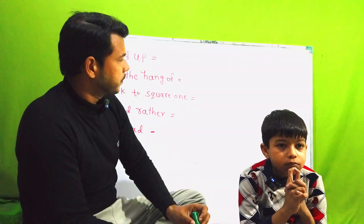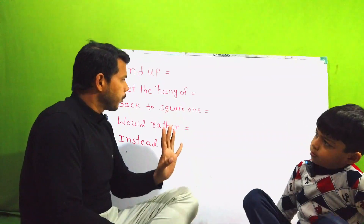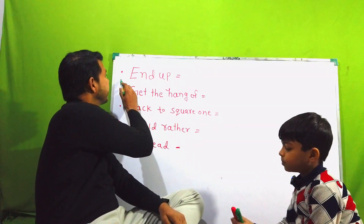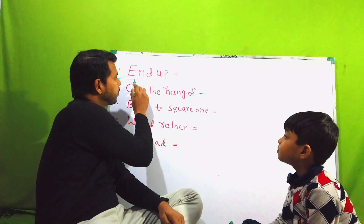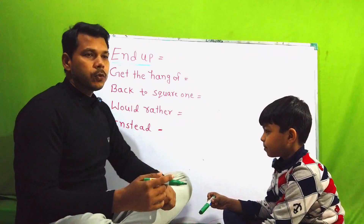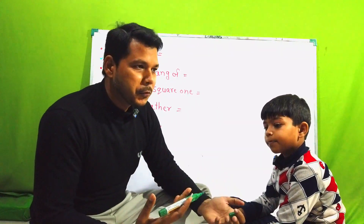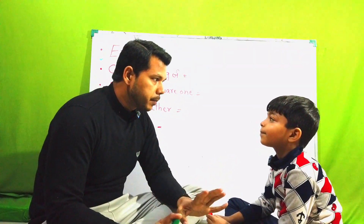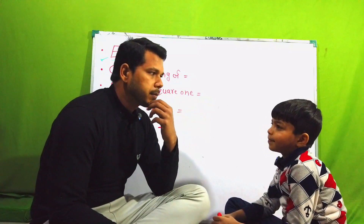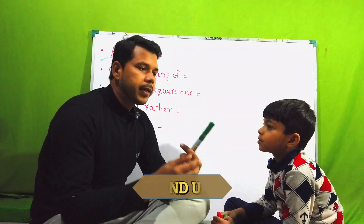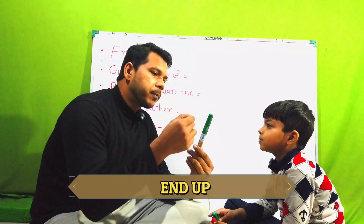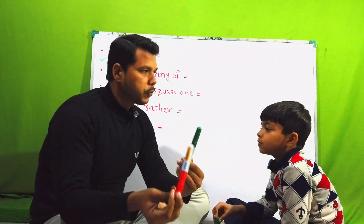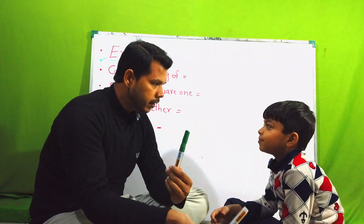The first structure, as you can see here, is 'ended up'. How to use 'ended up' — I'm going to teach him. First of all, 'ended up' — suppose you're going to buy something. Suppose you went to buy a green marker and you couldn't buy green, so you bought red. You can say: I went to buy a green marker but ended up buying a red marker.